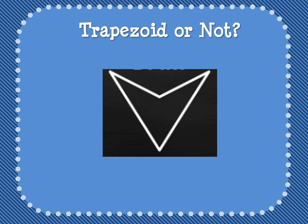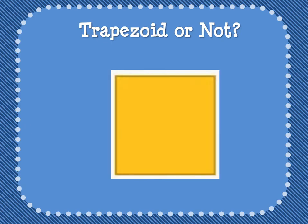Is this a trapezoid? Hopefully you said yes, this is a trapezoid. Those of you who didn't say it's a trapezoid are probably thinking: but Mrs. Hayes, that's not a trapezoid — that's a square!